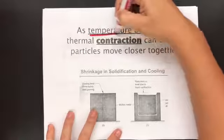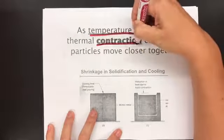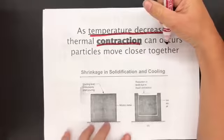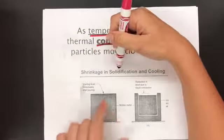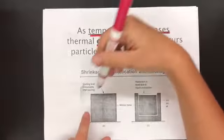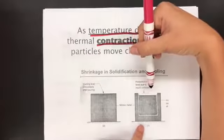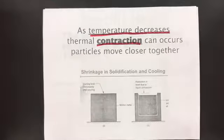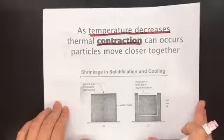As temperature decreases, contraction occurs. Particles move closer together. Shrinkage in solidification and cooling. So this is what's happening with the sidewalks. That's why you have cracks in the sidewalks and in bridges and things like that because during the winter and during the summer, those concrete is expanding and contracting depending on the temperature happening.